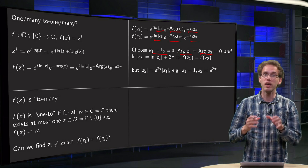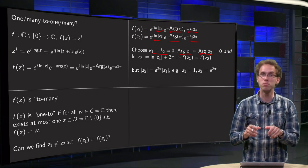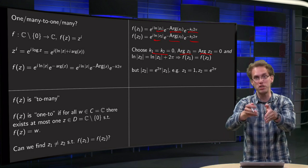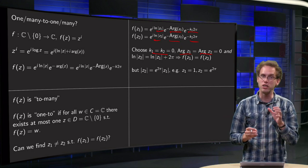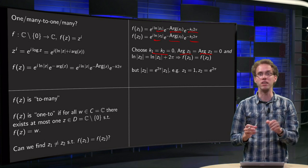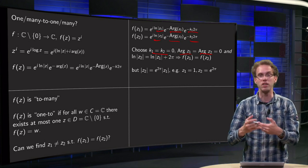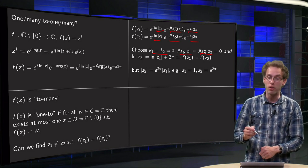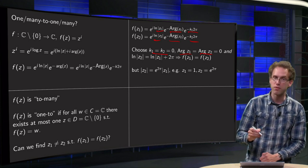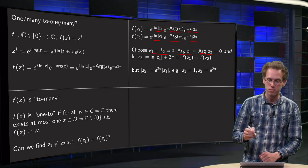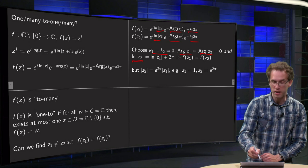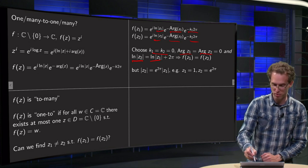Because even if we restrict ourselves this much, we will show that we still can find different z's which are mapped to the same value. So now we are really showing that it is a many-to-one function, because we are restricting and still finding different z's. How can we find them?